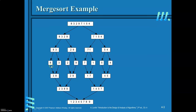For example, compare 3 and 8: 3 is smaller, so copy 3 first, then 8. This produces smaller sorted subarrays. Now I will explain how two subarrays are merged using the merge algorithm.